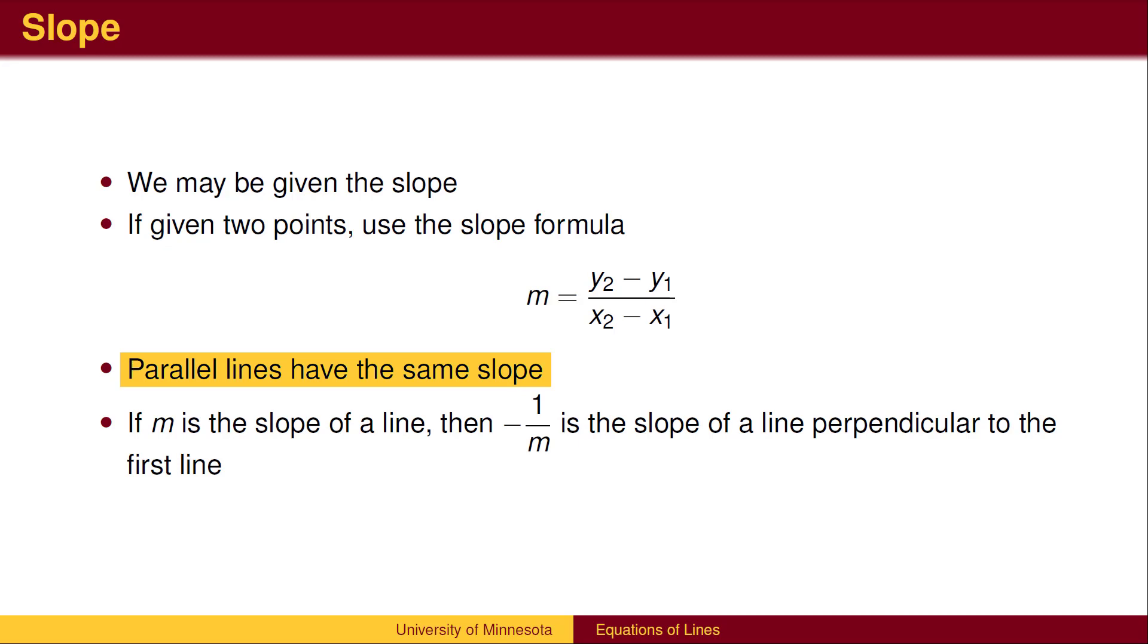We may be told that a line is parallel to a given line. Parallel lines have the same slope. We may be told that a line is perpendicular to a given line. The slope of a line is the negative reciprocal of the slope of the perpendicular line.